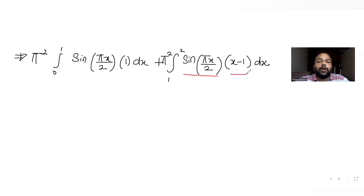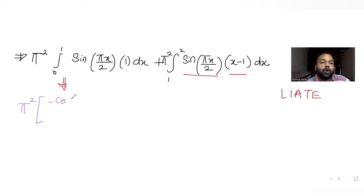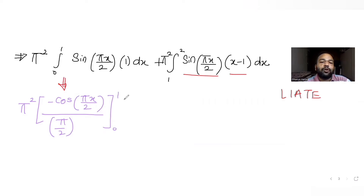The first integral can be solved directly. We know that the integral of sin(θ) is minus cos(θ), so integrating sin(πx/2) gives minus cos(πx/2) divided by the coefficient of x, which is π/2, evaluated from 0 to 1. For the second part, we need to apply integration by parts.